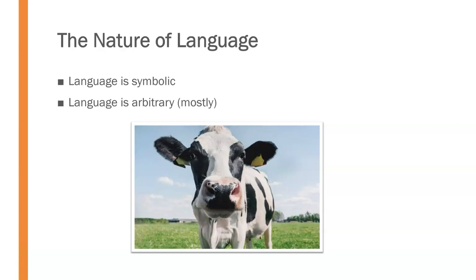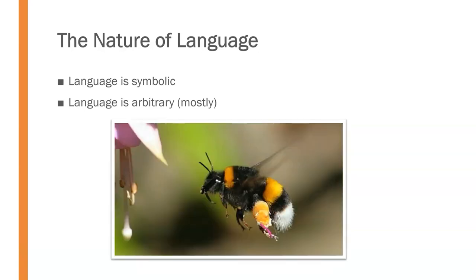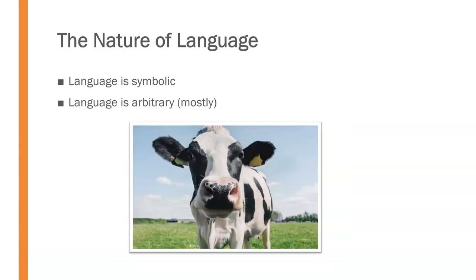There are some exceptions, however. Words like boom, buzz, and even the moo from our old friend here are intended to mimic the sound that they represent. This is called onomatopoeia, but is far less common than an arbitrary connection between the symbol and the actual thing.